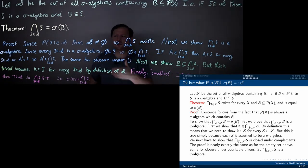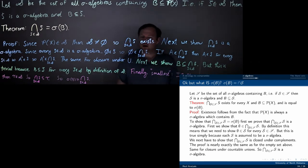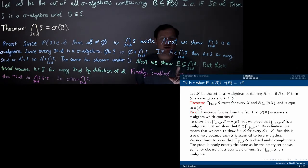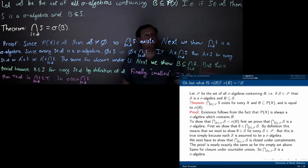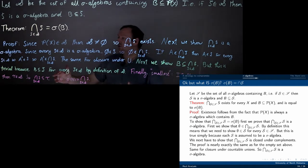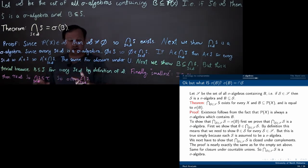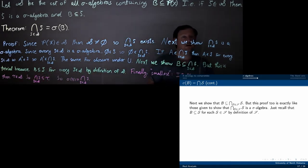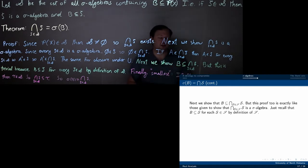The same argument applies for union — it's so similar I won't go into it; it should be very doable, almost verbatim. I also want to show that B is contained within this intersection, and the argument is very similar. By definition of cursive S, every sigma algebra in it contains B as a subset — that's just by definition. Since B is in every single one of them, it's in the intersection.